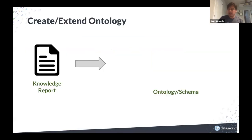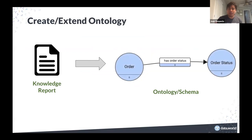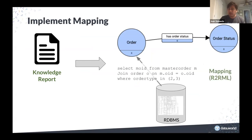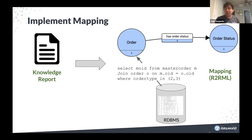In the knowledge implementation step, you take this report and actually implement it. You implement your ontology, your target schema — now we start seeing the schema for our knowledge graph. An order has an order status. Now I can actually implement these mappings: I have my source database and my target schema. There are actually standardized mapping languages from relational databases to RDF graphs — R2RML is the example for that.